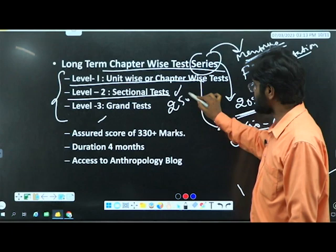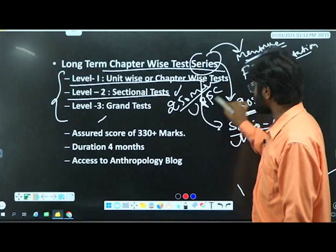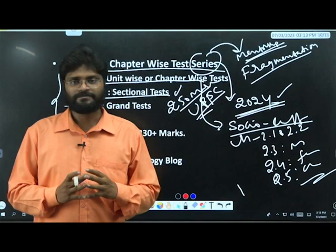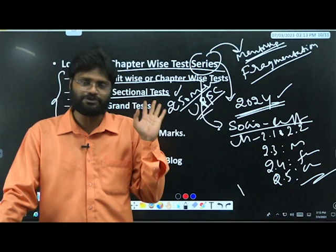Once you finish all the chapters in social cultural anthropology, the next thing is you will attend a grand test - 250 marks, duration as per pattern. You will get sufficient time to prepare your notes, to test your knowledge in the particular unit or chapter, and you will be comfortably ready for the sectional test.